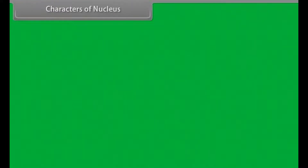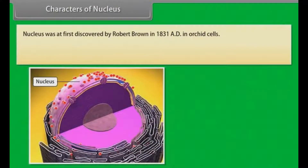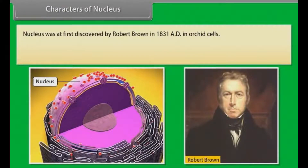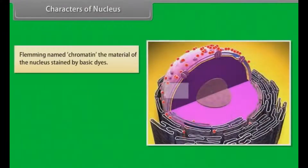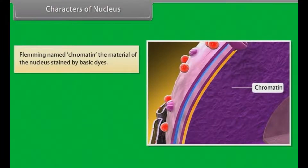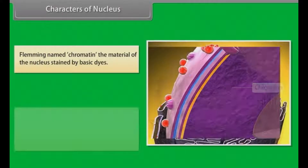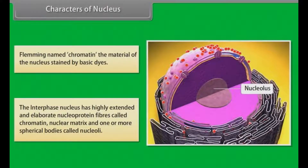Characters of nucleus: Nucleus was first discovered by Robert Brown in 1831 AD in orchid cells. Nucleus is also called the director of the cell. It is the most important part of the cell, which directs and controls all cellular functions. Fleming named chromatin the material of the nucleus stained by basic dyes. The interphase nucleus has highly extended and elaborate nucleoprotein fiber called chromatin, nuclear matrix, and one or more spherical bodies called nucleoli.